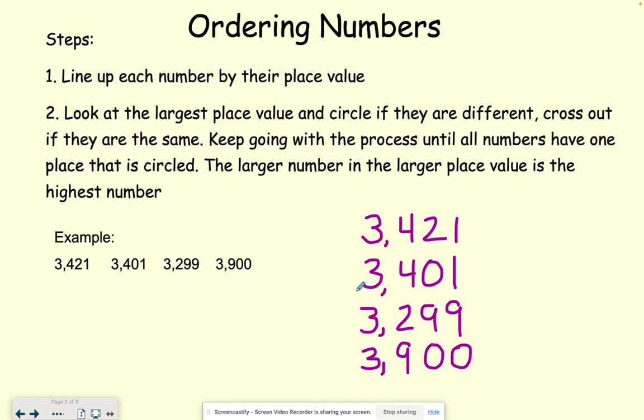So we're going to look at the largest place value first. And in this case, all of them have a three in it. So we are just going to cross that whole row out. They all start with the same place value in the thousands. Our next one, we can see that we have two fours. So those are the same. But we have a two and we have a nine. Those are different.